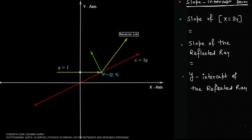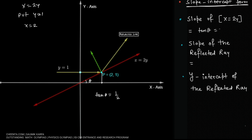Now let us figure out the slope of x=2y. The intersection point of the incident ray and the mirror is (2,1), because if we take x=2y and replace y=1, we get x=2. So that point is (2,1). If we drop a perpendicular from this point, tan(theta) is just 1/2, so the slope of the mirror is tan(theta) = 1/2.